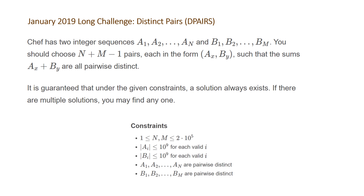The problem states: Chef has two integer sequences a1 to a_n and b1 to b_m. You should choose n plus m minus 1 pairs, each in the form (a_x, b_y), such that the sums a_x plus b_y are all pairwise distinct. It is guaranteed that a solution always exists; if there are multiple solutions you may find any one. A very nice short problem statement and an interesting problem.